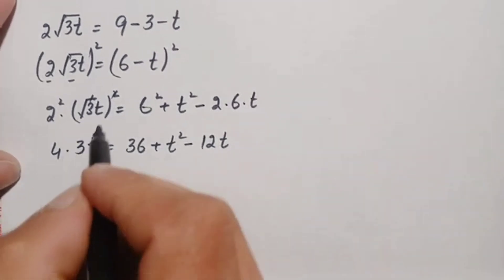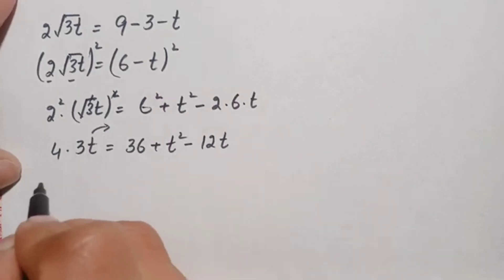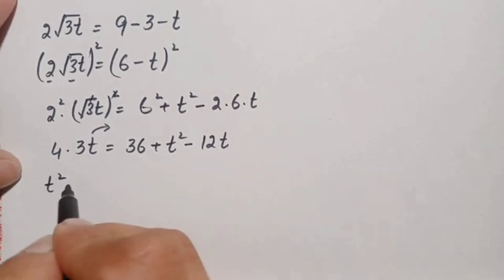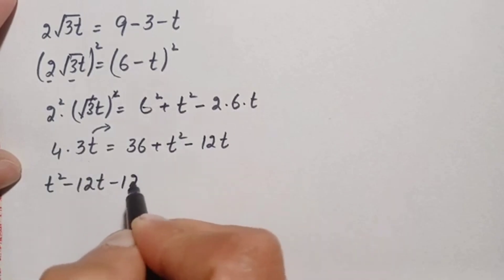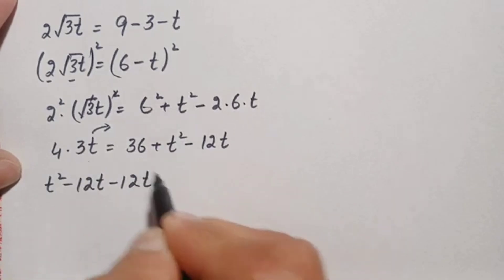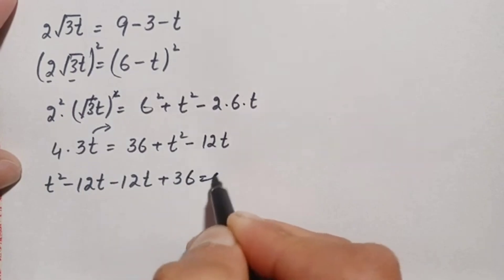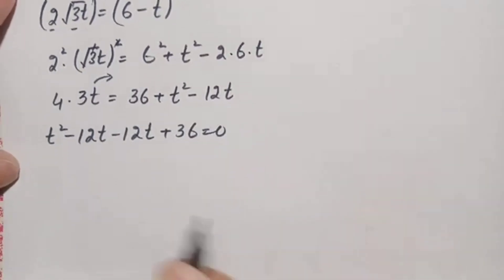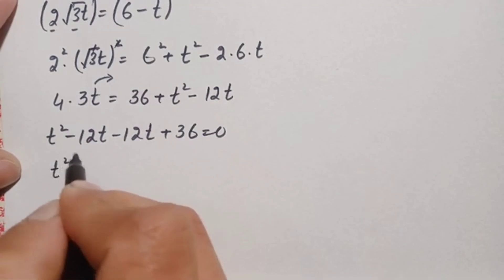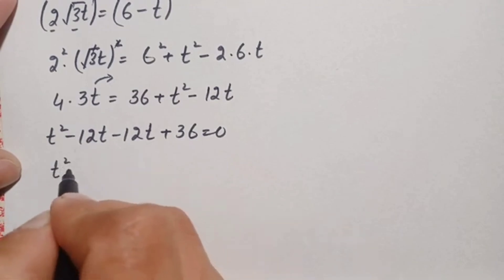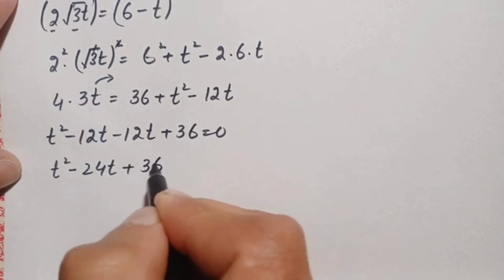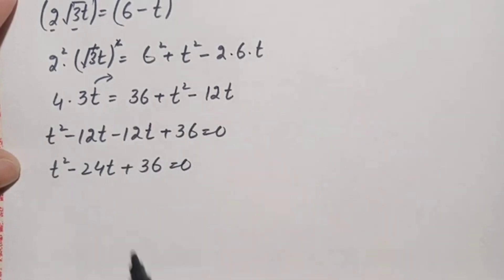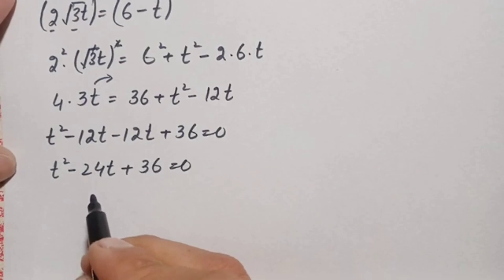Moving 12t to the right hand side: t squared minus 12t minus 12t plus 36 equals 0, which simplifies to t squared minus 24t plus 36 equals 0. This is a quadratic equation that cannot be solved by factorization, so we will use the quadratic formula.